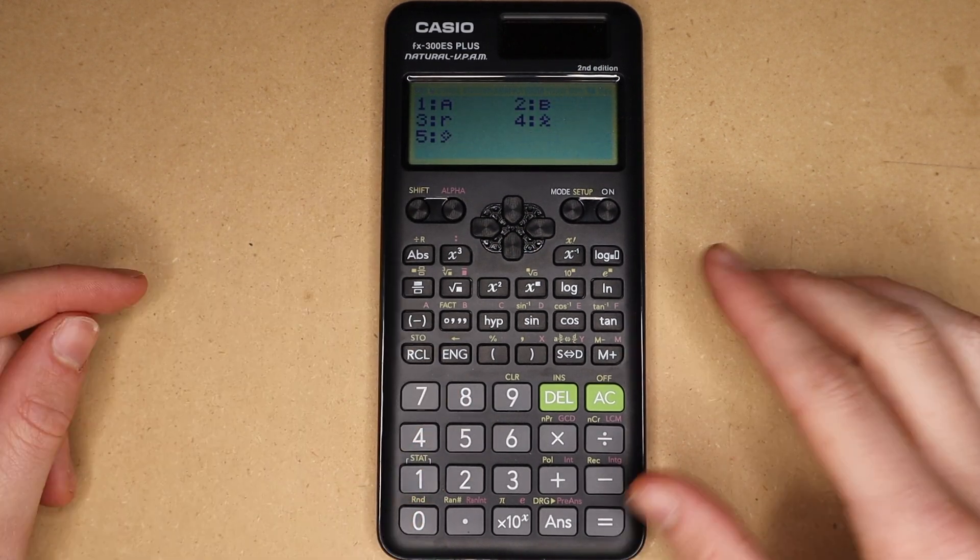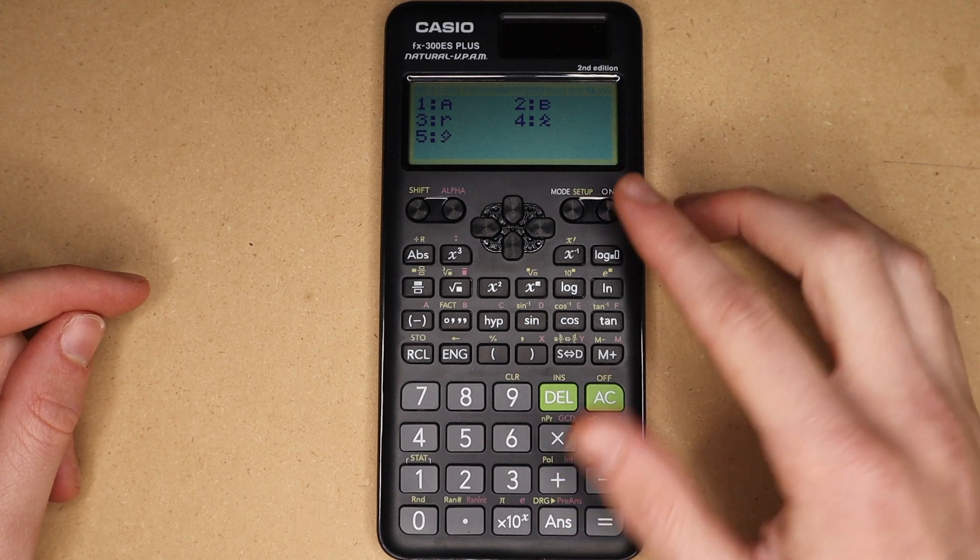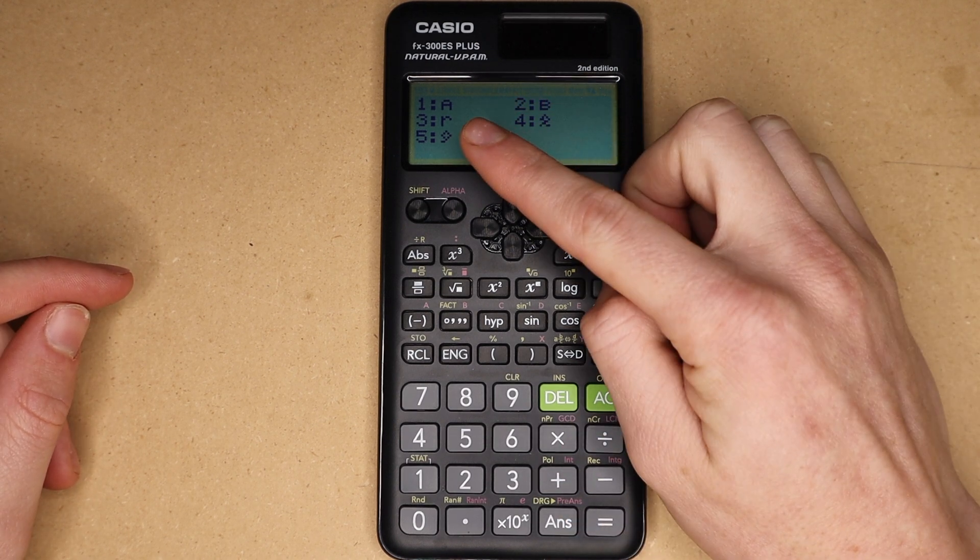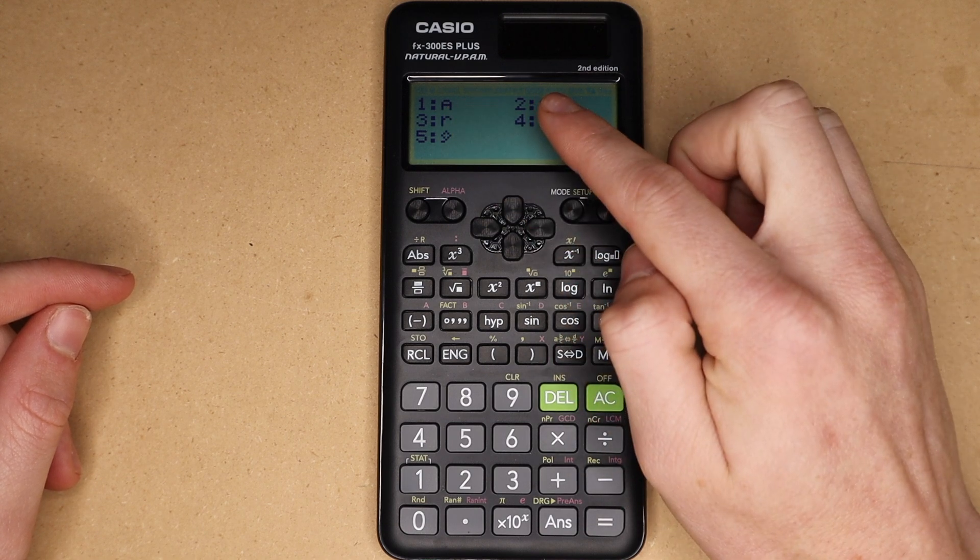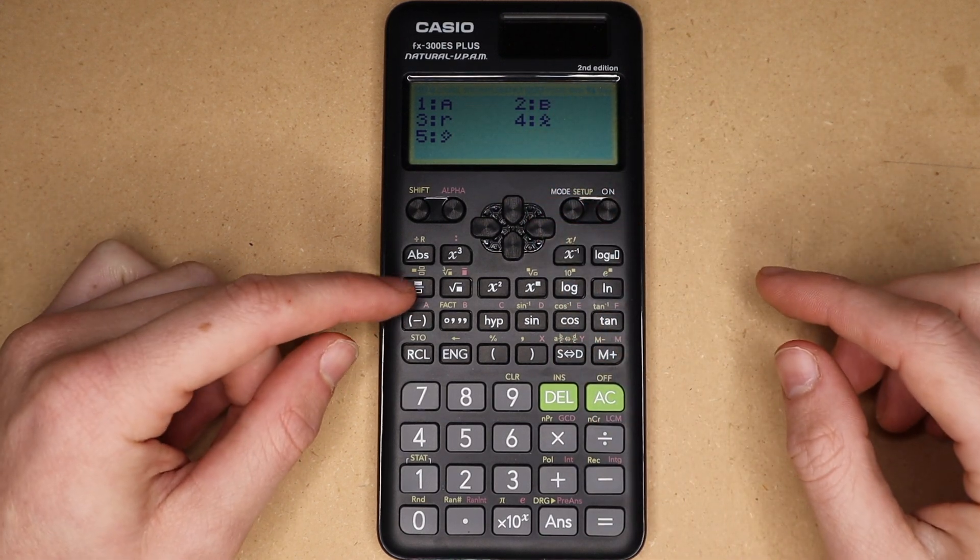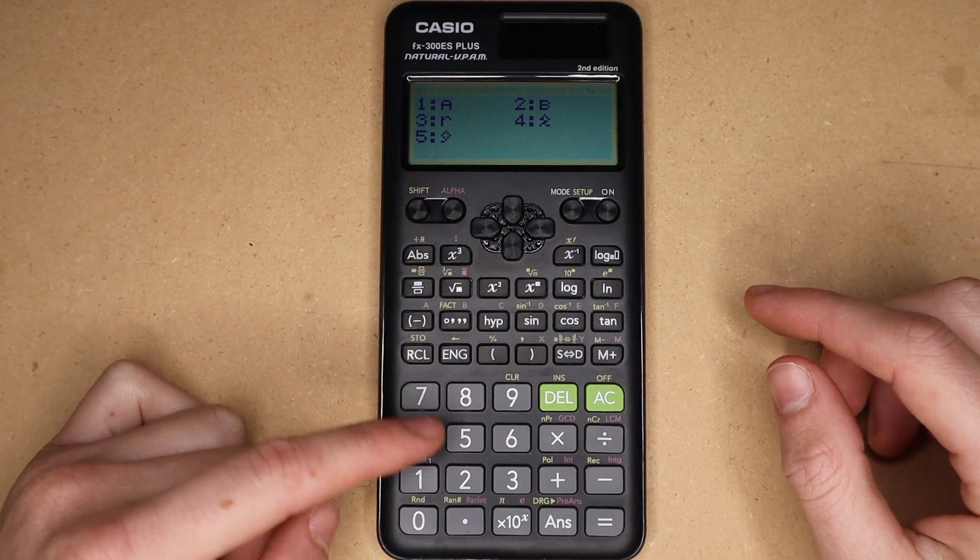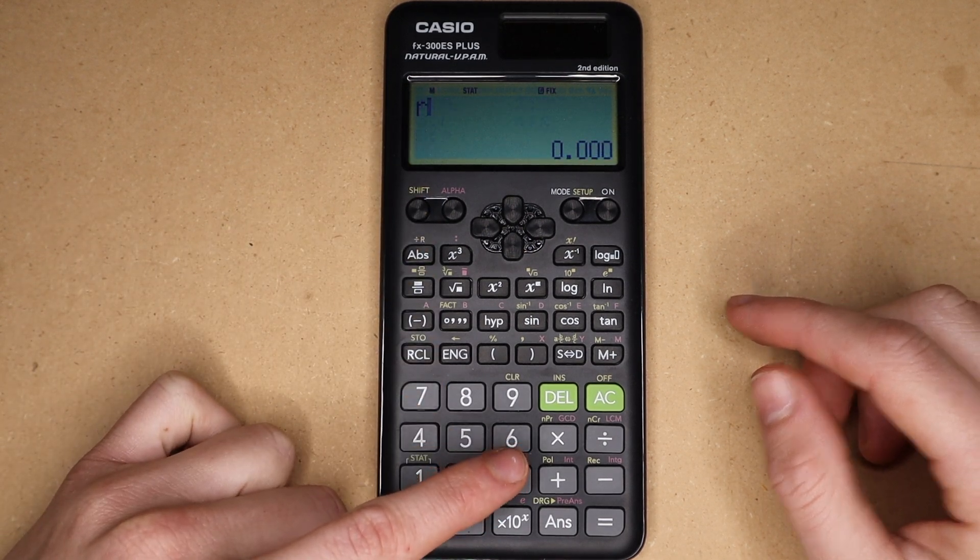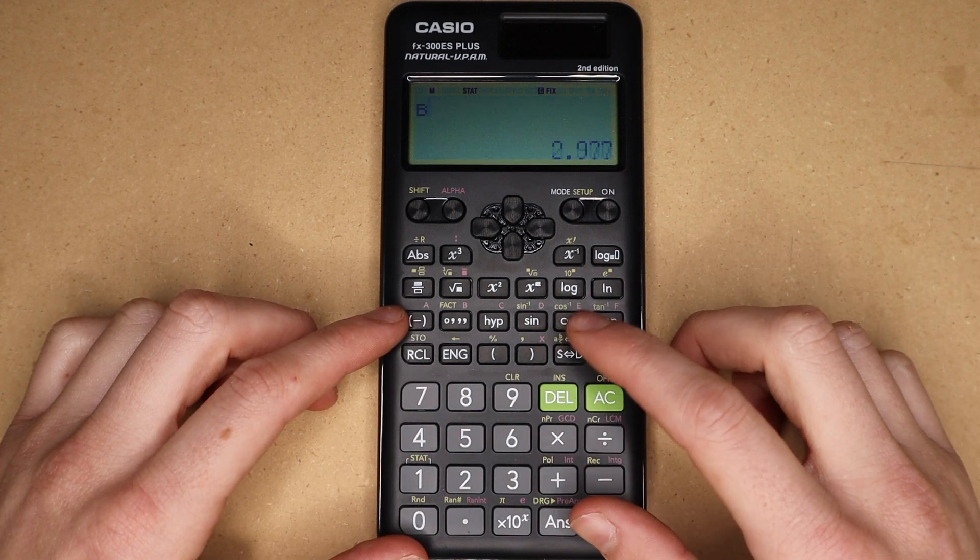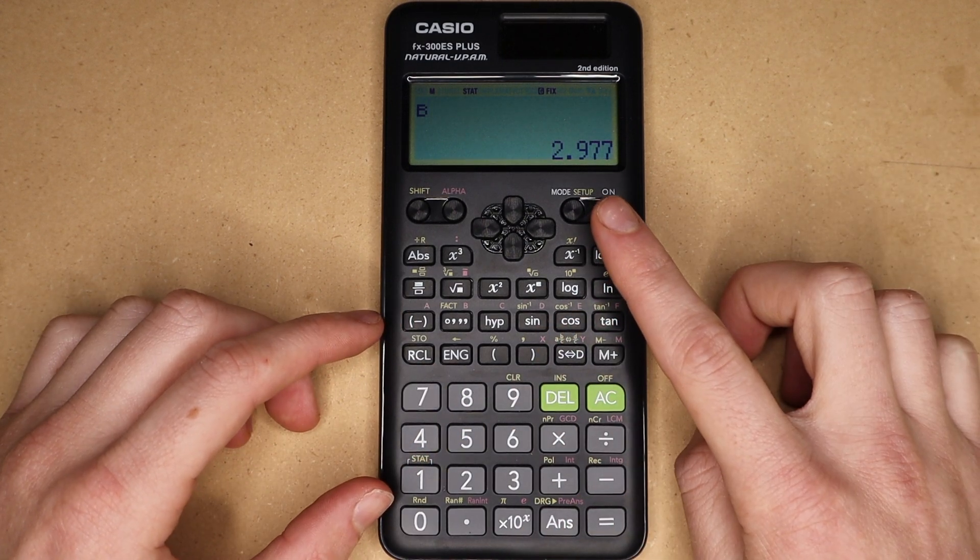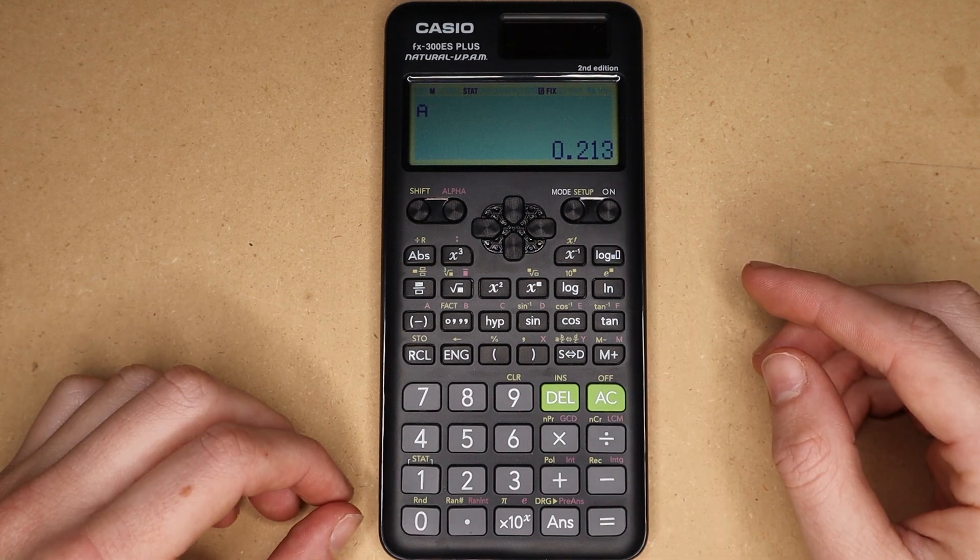And then you can press AC and then shift one for stat and if you press 5 for reg it will bring up this menu where you can see from your original fit equation that you selected you can select a or B and then also you can select the correlation coefficient R which for our case is 0.999. B which in our case would be the slope is 2.977 and then A is 0.213.